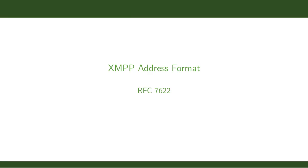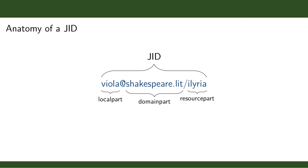To support this federated network, XMPP uses something called a JID — which stands for Jabber ID or Jabber Identifier for legacy historical reasons. It looks broadly similar to an email address except it has an extra part at the end after a slash. The local part of a JID is the same as in email — the first bit before the at-sign — and defines the specific account on the server. The domain part refers to the actual server. In this example it's shakespeare.lit.